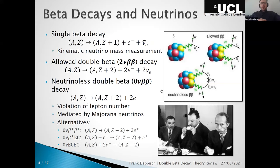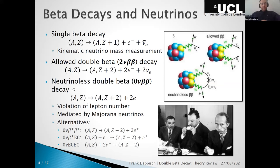Neutrinoless double beta decay is the universal tool to look for lepton number violation, specifically for light Majorana neutrinos, and it's part of the family of beta decays important for neutrino physics. Single beta decay allows kinematic measurement of neutrino mass in tritium. What I'm talking about here is a second-order effect: instead of one beta decay, you have two happening simultaneously — the so-called allowed double beta decay, which is allowed in the Standard Model.